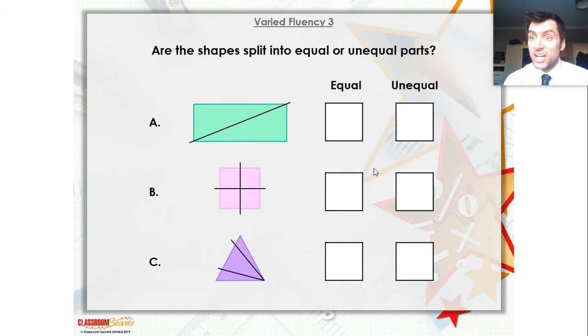Maybe try and write down the word equal or unequal, just because then it's good spelling practice for the Q and the U element of those words. So the first one is two triangles, which are exactly the same, which we split our rectangle into. We have split our square into four equal squares. And then our triangle is in three triangles, but they're not the same size. They're not equal triangles. So we've not split the triangle into equal parts. It's unequal parts.